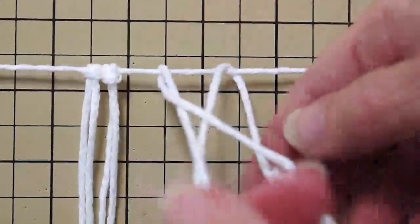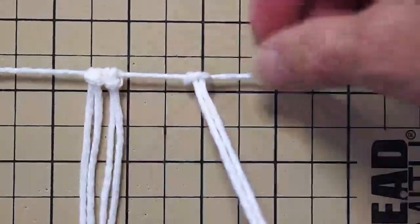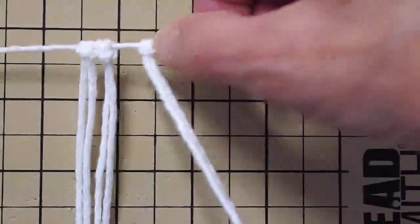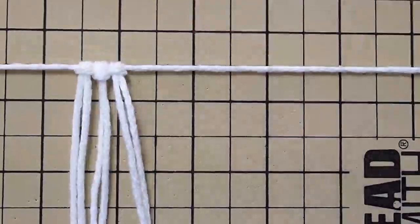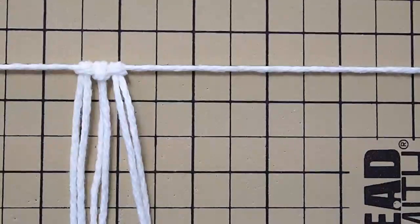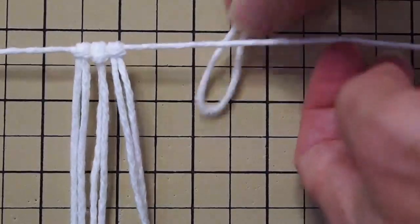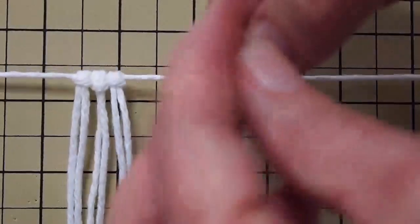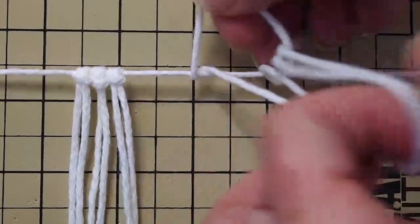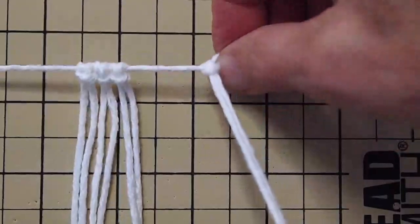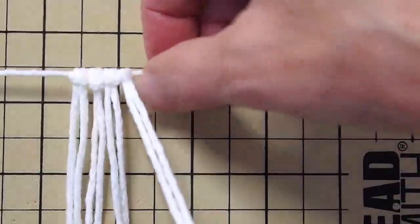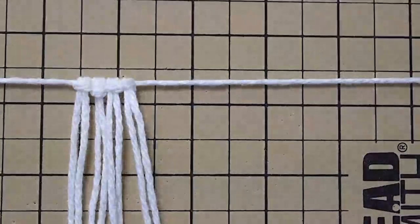You're going to want a total of 12 cords, and one of them will be the one that you string across your macrame board, and then you'll just mount the rest of them on that cord like I've shown in the past in my basic macrame videos.